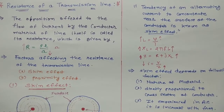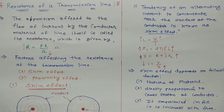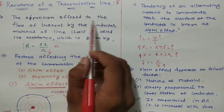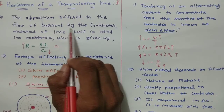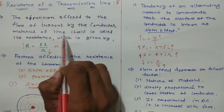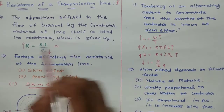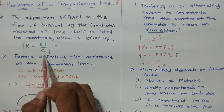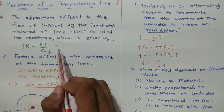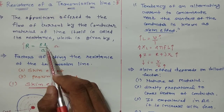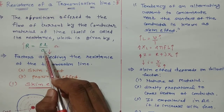Hello everyone. In this video we discuss about resistance of transmission line and factors affecting the resistance of transmission line. First of all, resistance is the opposition offered to the flow of current by the conductor material of the line itself. It is given by R = ρl/A, where ρ is resistivity of the material, l is length of the conductor, and A is cross-sectional area of the conductor. Its unit is ohm.